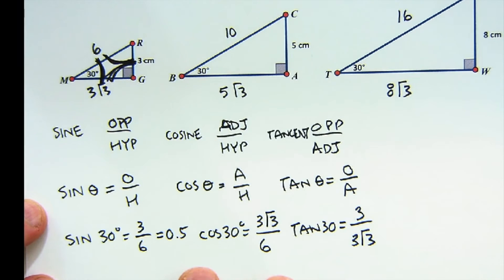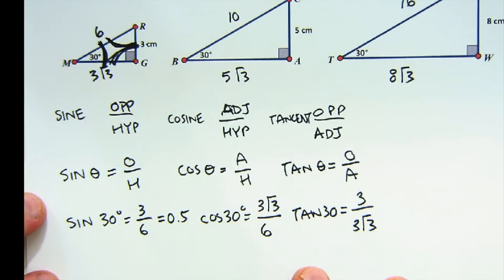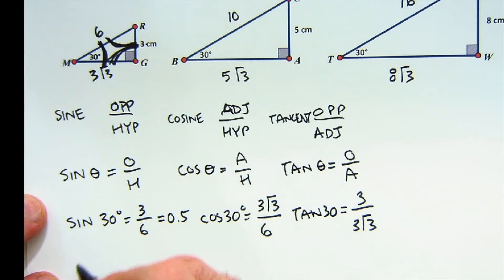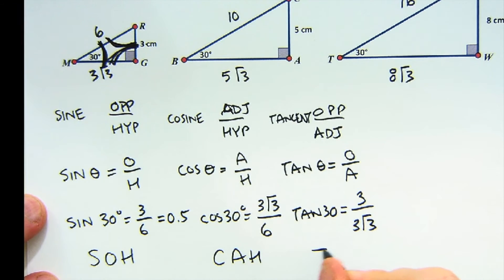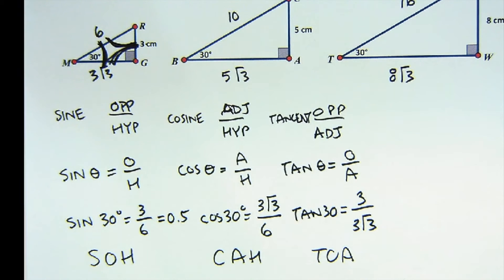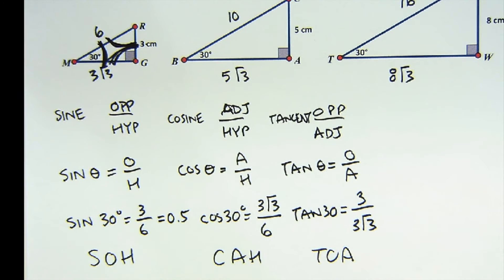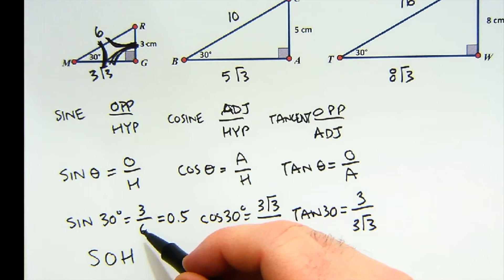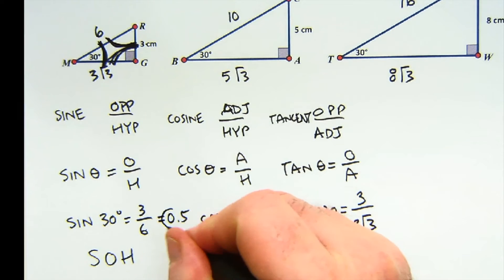Let me talk about what students use to remember these ratios. Some students use SOH-CAH-TOA: sine is opposite over hypotenuse, cosine is adjacent over hypotenuse, and tangent is opposite over adjacent. Just to record what these values come out to be: the sine ratio of 30 degrees is 3 to 6, which came out to be 0.5.